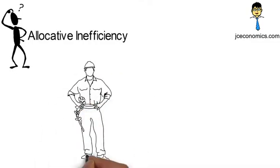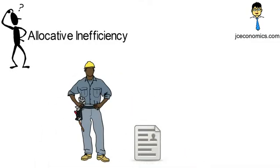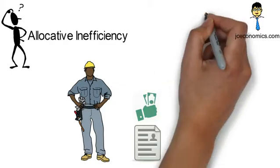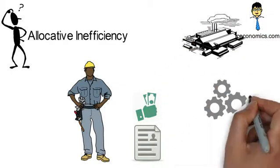An example is when workers do not know all the job opportunities and wages being offered, or where producers do not know the most efficient production methods.